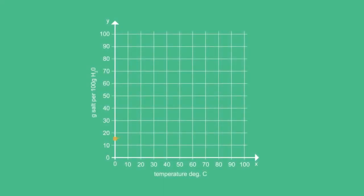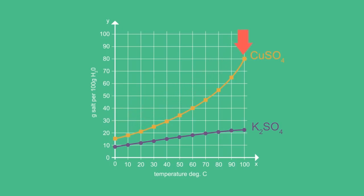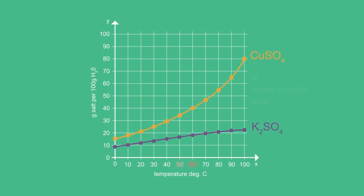Here are solubility curves for CO2 sulfate and potassium sulfate. We can see that for all temperatures, CO2 sulfate is more soluble than potassium sulfate. From a solubility curve, it is also possible to find solubility at a certain temperature.